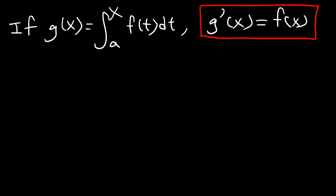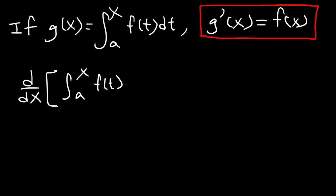Another way to express the first part of the fundamental theorem of calculus is: the derivative of the integral from a to x of f of t dt is going to equal f of x. For the most part, you're replacing t with x, but that's not always the case, as some examples will illustrate. That's the basic idea behind the first part of the fundamental theorem of calculus.